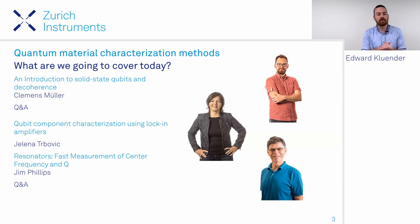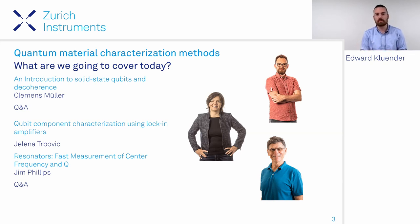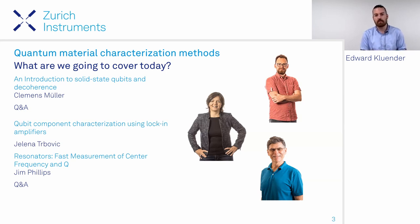The first section will be by Clemens, who will give a brief introduction on solid state qubits, both semiconducting and superconducting, and the main causes of decoherence. After a brief Q&A, Jelena will cover how lock-in amplifiers are used to characterize quantum materials for parameters that greatly impact qubit performance. Finally, Jim will present a method for characterizing high-frequency resonators using Pound-Drever-Hall locking to rapidly measure Q and center frequency.